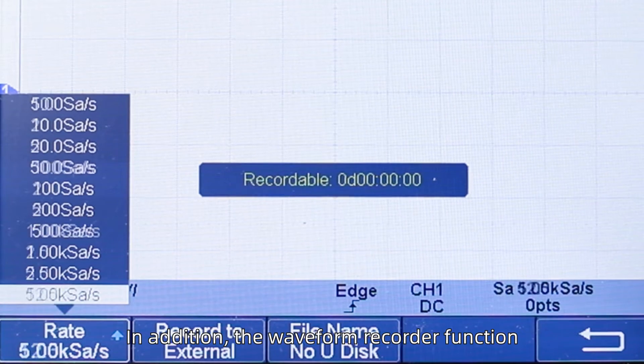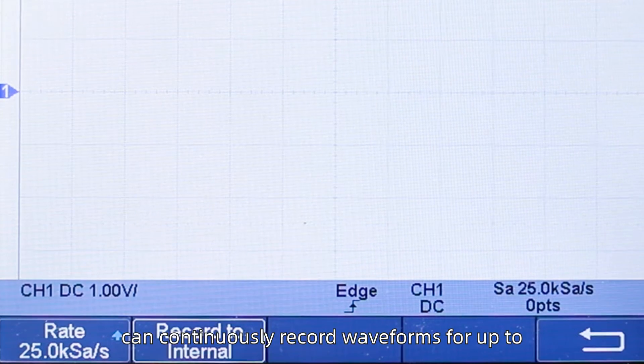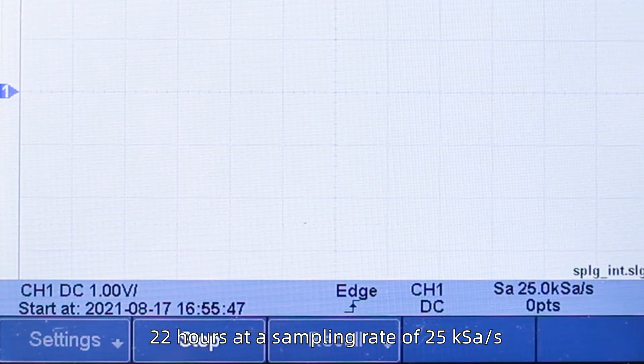In addition, the waveform recorder function can continuously record waveforms for up to 22 hours at a sampling rate of 25 ks per second.